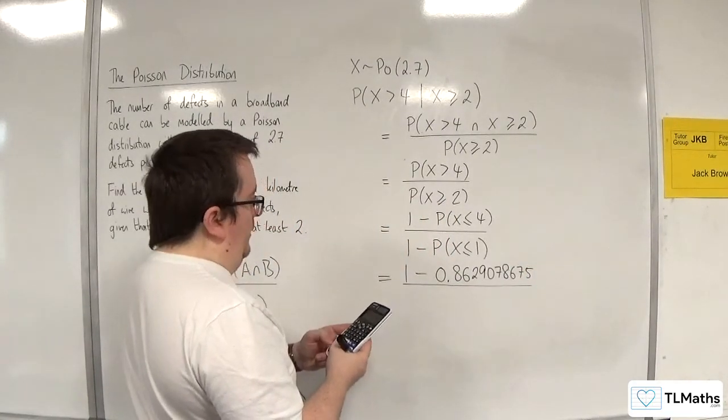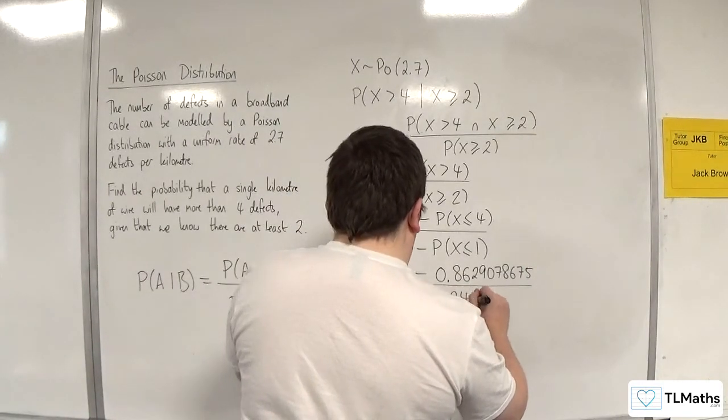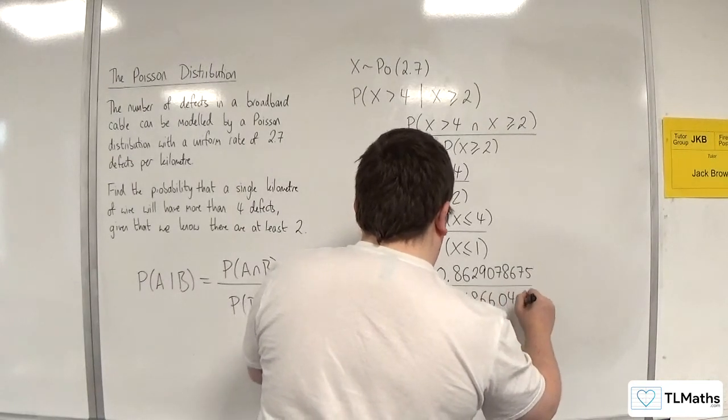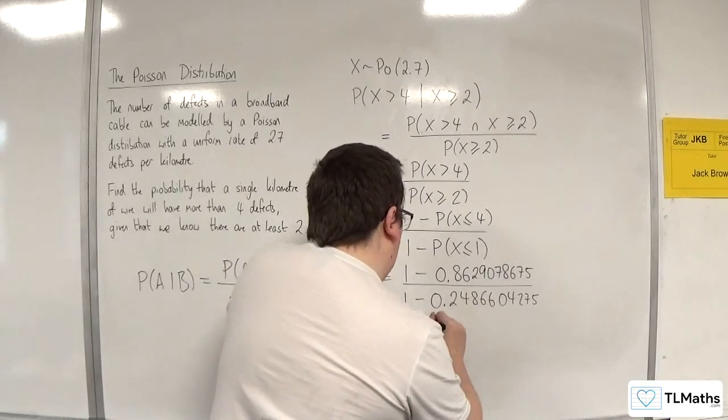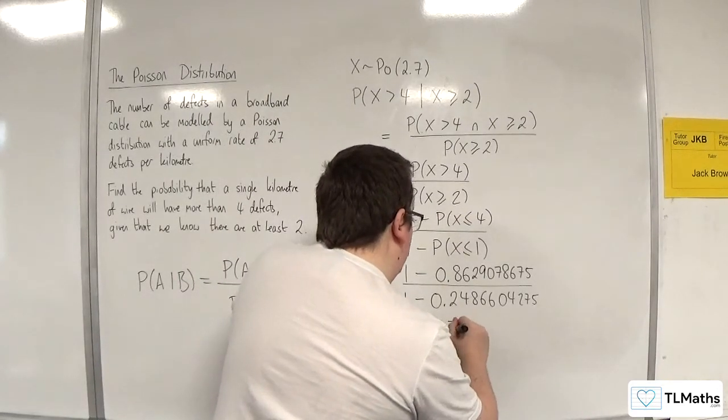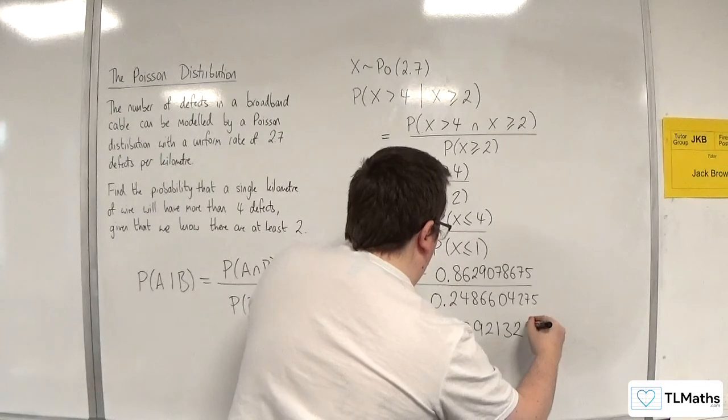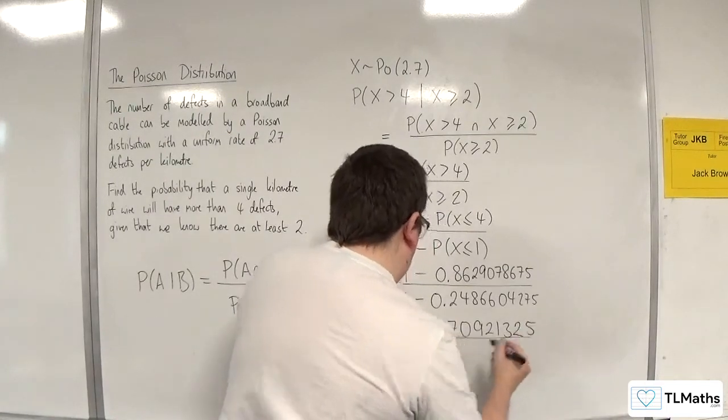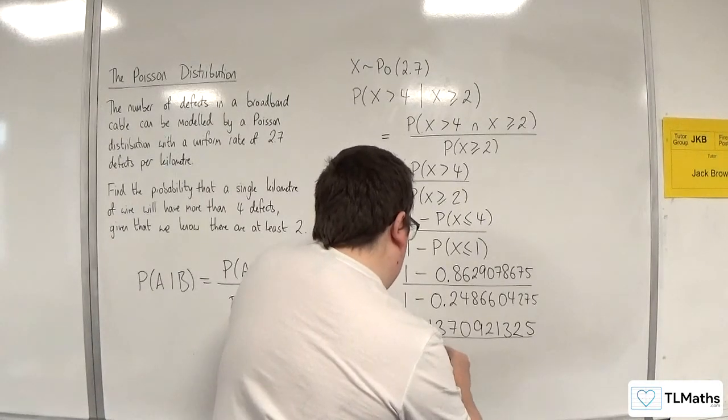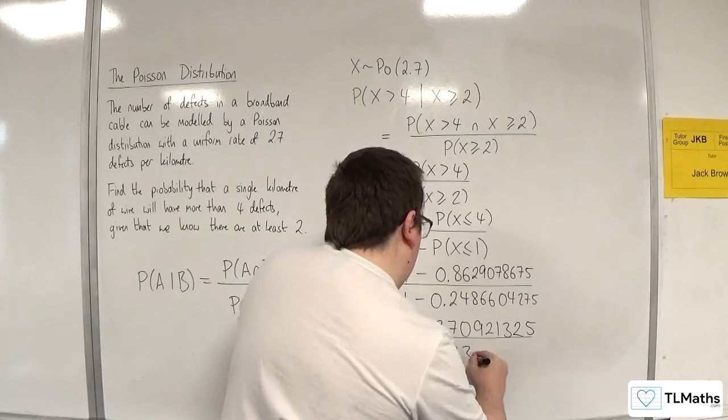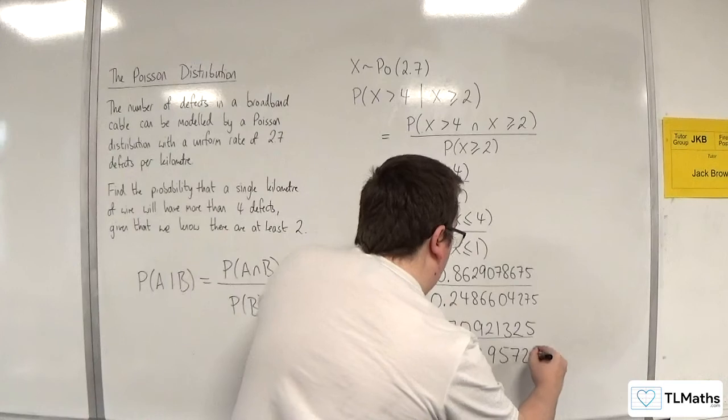And let's change X to 1. So we've got 1 take away 0.2486604275. So our numerator is 0.1370921325.